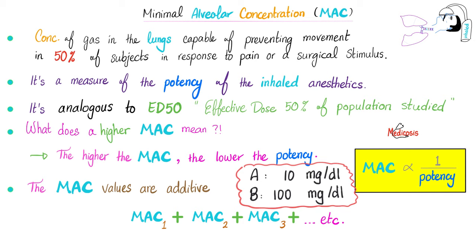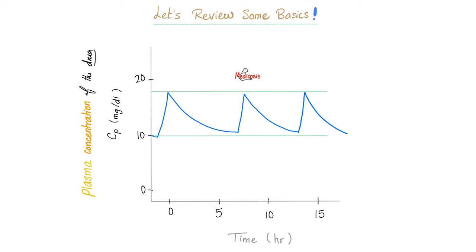The MAC values are additive, so if you are giving three drugs together, you add MAC1 plus MAC2 plus MAC3. Here is a graph plotting plasma concentration of the drug on the y-axis and time on the x-axis. After giving a drug, the plasma concentration increases then decreases, showing fluctuation.